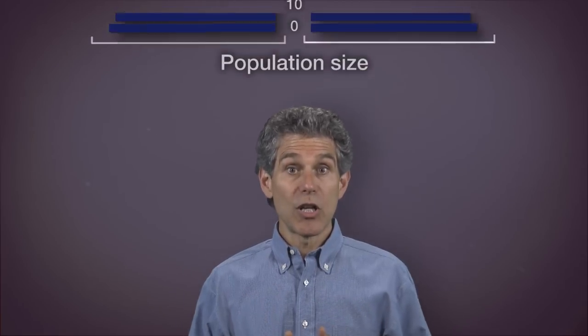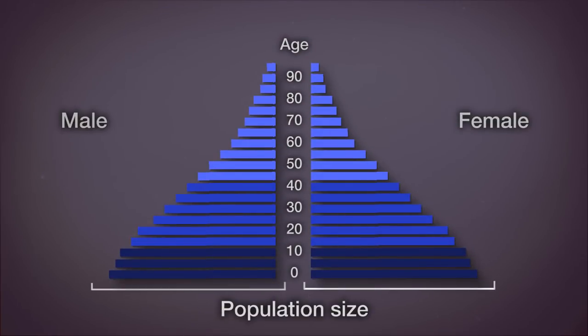There are three broad categories for organizing age structure diagrams. The first one is the population pyramid. A country with many more younger people than older people looks like a pyramid, and that's why age structure diagrams are often called population pyramids.